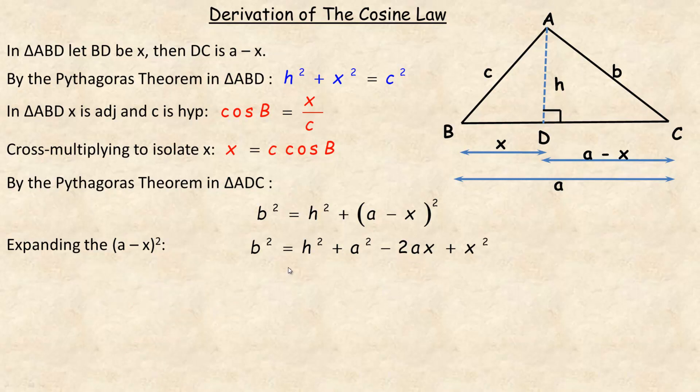So next, we're going to do a little rearranging. I'm going to write this in a slightly different order. So all I'm doing is I'm bringing the X squared over here and write it right after the H squared. And then I've got the A squared minus 2AX afterwards on the end.